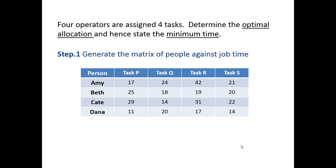So I have a range of four people and four tasks here. The information we have is that Amy can do task P in 17 minutes, Amy can do task Q in 24, Amy can complete task R in 42, and Amy can complete task S in 21, and so forth for Beth, Kate, and Dana.